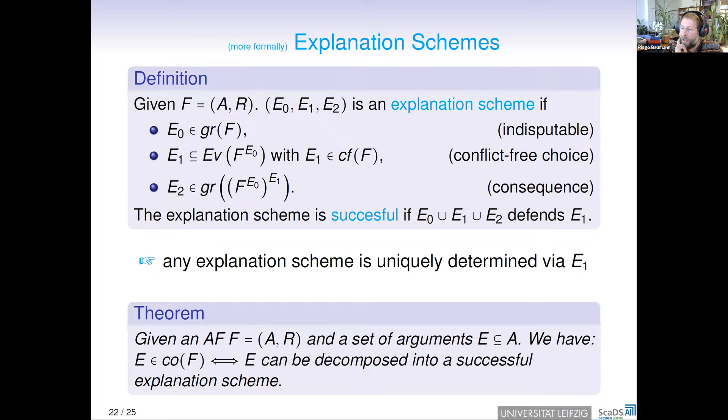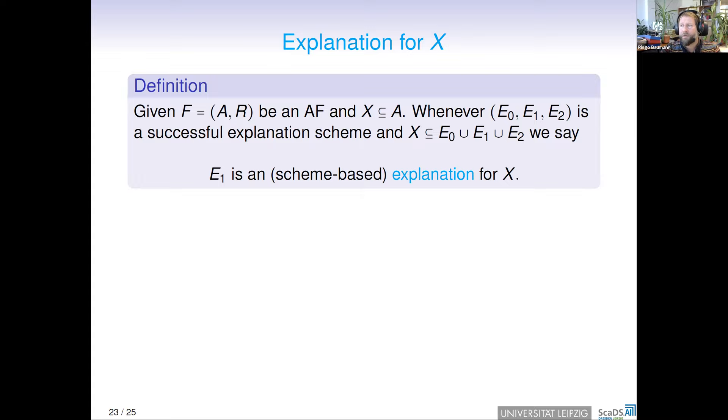With this definition, we have a new characterization for complete semantics, namely, a set is complete if and only if it can be decomposed into a successful explanation scheme. With this characterization, we defined a new notion of explanation. We say, given a successful explanation scheme, and if a set X is contained in the union of E0, E1, and E2, we say that E1 is a scheme-based explanation for X.